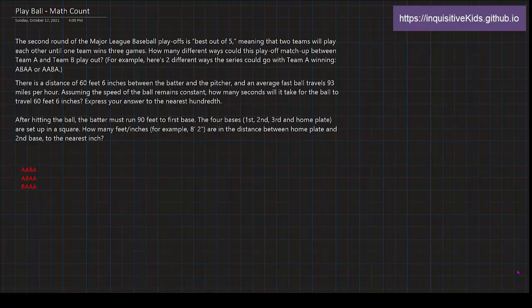For example, here's two different ways the series could go with Team A winning: A, B, A, A, or A, A, B, A. So as you can see over here, I'm going to make a chart of all the different possibilities. So how many different ways? We could just keep writing until we have all the different possibilities. First, let's do the ones where A wins, Team A wins.